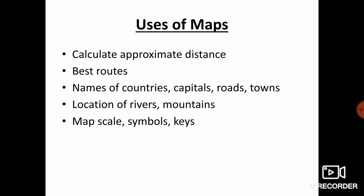Next, uses of maps. We use maps for the following purposes. First, to calculate approximate distance between two cities. To find out the best routes to travel to a place. To find out names of countries, capitals, roads, towns, and other places. To find out location of rivers, mountains, and other features.